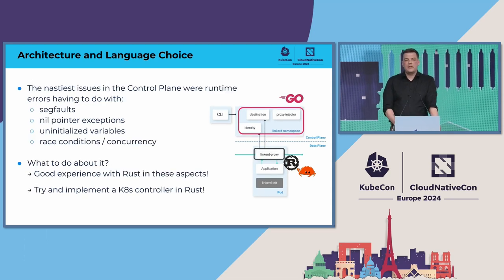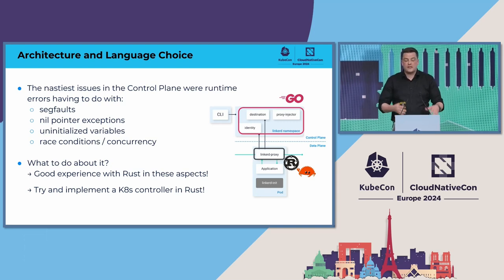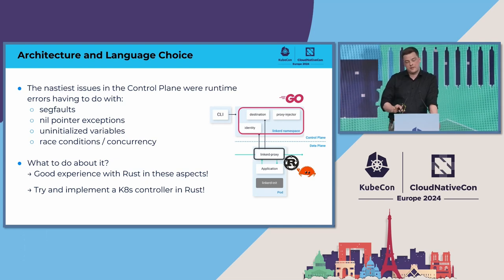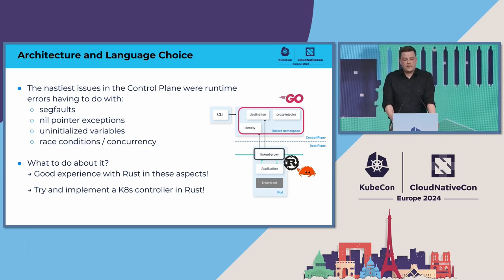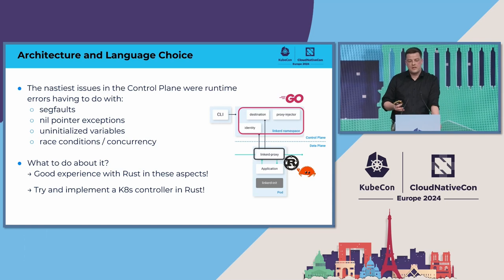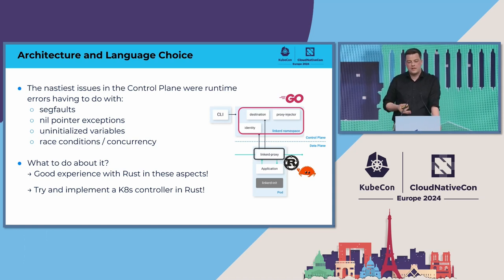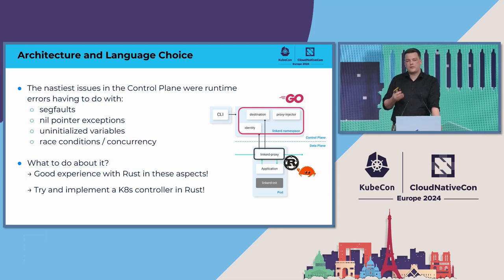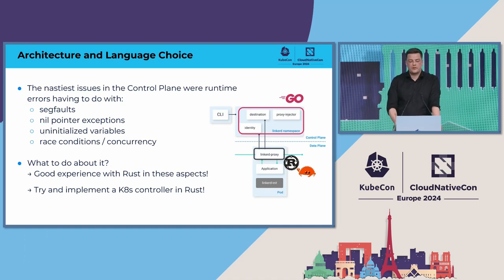Looking at the history of Linkerd's control plane and recent GitHub issues, there were four recent issues in the destination controller — not the policy controller, which is implemented in Rust — that resulted from runtime issues that are hard to catch, like concurrency, race conditions, and uninitialized variables. When implementing the policy controller, the Linkerd team thought: could we implement that in Rust to avoid these things? With a policy controller or any control plane, you really want to keep it up — especially in edge environments where you can't just restart things.